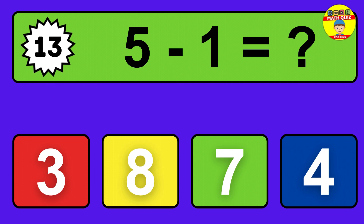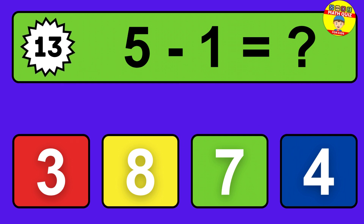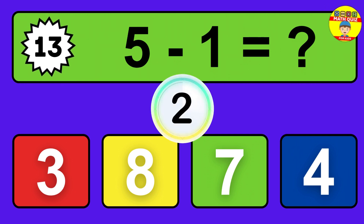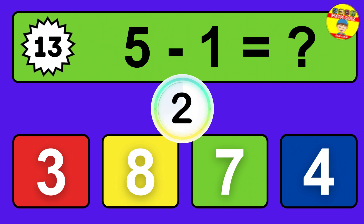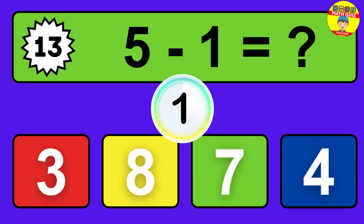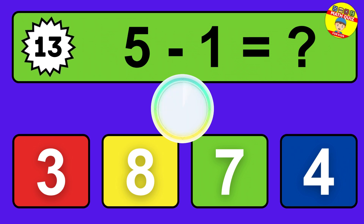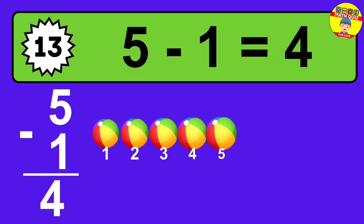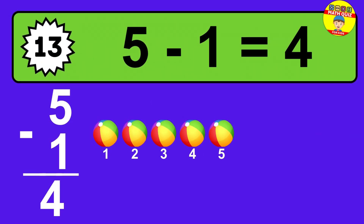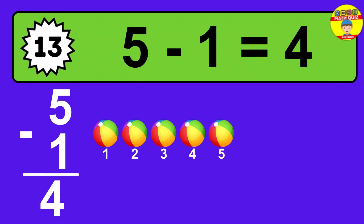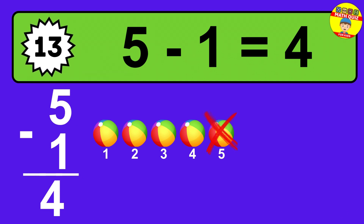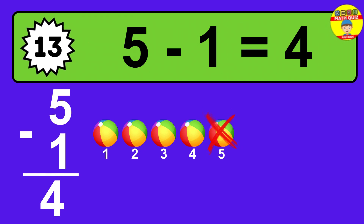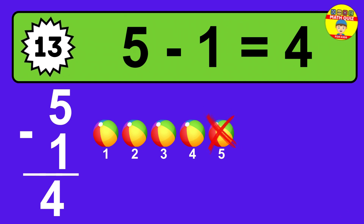Question thirteen: five minus one equals what? The answer is five minus one is four. Let's count it. One, two, three, four.